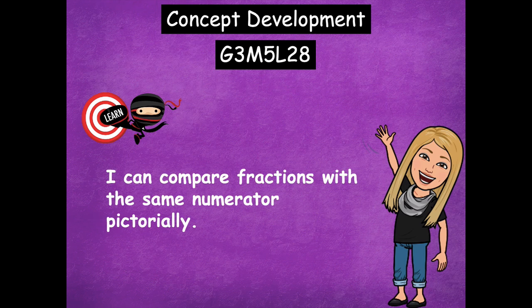Our learning goal for today says: I can compare fractions with the same numerator pictorially. Pictorially just means draw a picture — you can almost see the word picture in pictorially. So all of our fractions today will have the same numerator on top — it could be two-fifths, two-fourths, two-sevenths, two-tenths. They're all going to have the same numerator, but we really have to pay attention to that model to help us see what those two parts are representing.